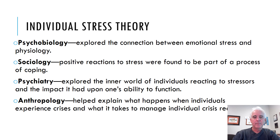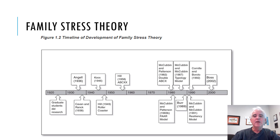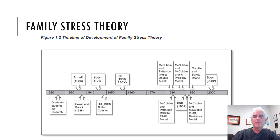Now we turn to family stress. You can see the timeline from the 1920s up until about the 2000s and the various thinkers throughout the ages — Abigail, Cavan, and Rank in the 1930s; Coos and Hill with his roller coaster model in the 1940s; Hill's ABCX model in the 1950s; the ABCX model being further developed in the 1980s along with the FAR model, McCubbin and McCubbin's typology model, and Burr's model; the resilience model emerging in the 1990s; and Boss's model in the 2000s.